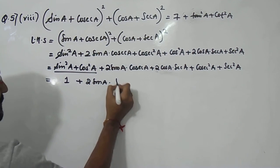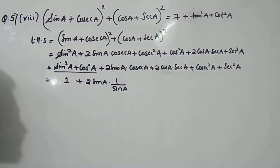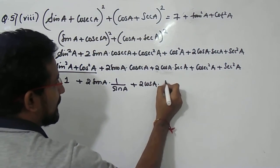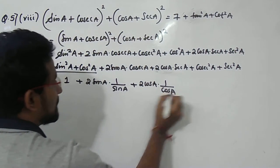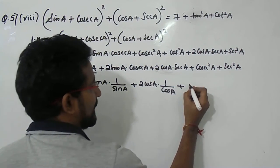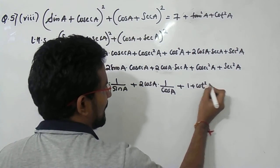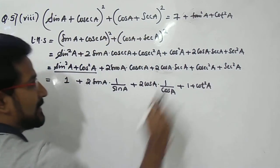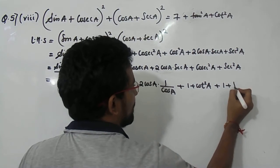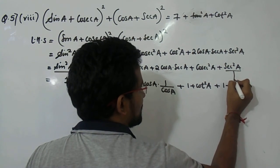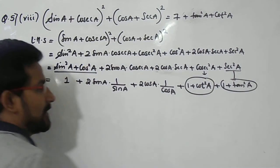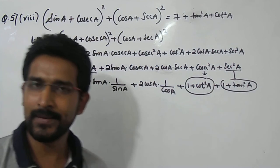Now, cosec a can be written as 1/sin a, so 2·sin a·cosec a = 2·sin a·(1/sin a). And sec a is 1/cos a, so 2·cos a·sec a = 2·cos a·(1/cos a). For cosec²a, we use the identity cosec²a = 1 + cot²a, and for sec²a we use sec²a = 1 + tan²a. So in place of cosec²a we write 1 + cot²a, and in place of sec²a we write 1 + tan²a.